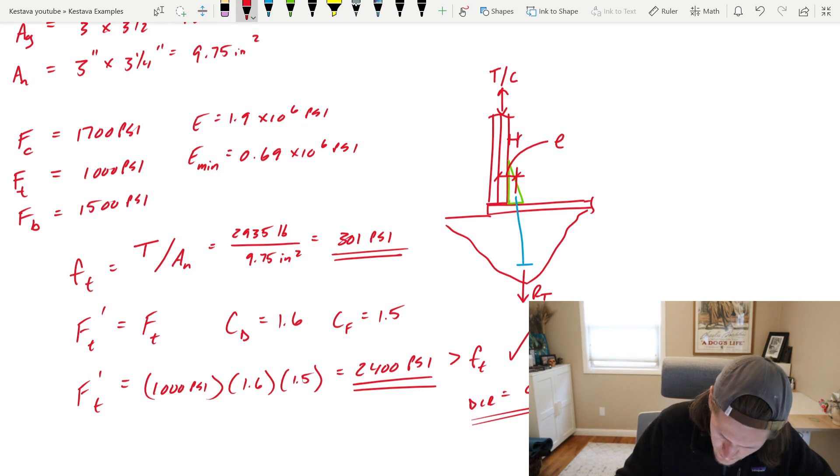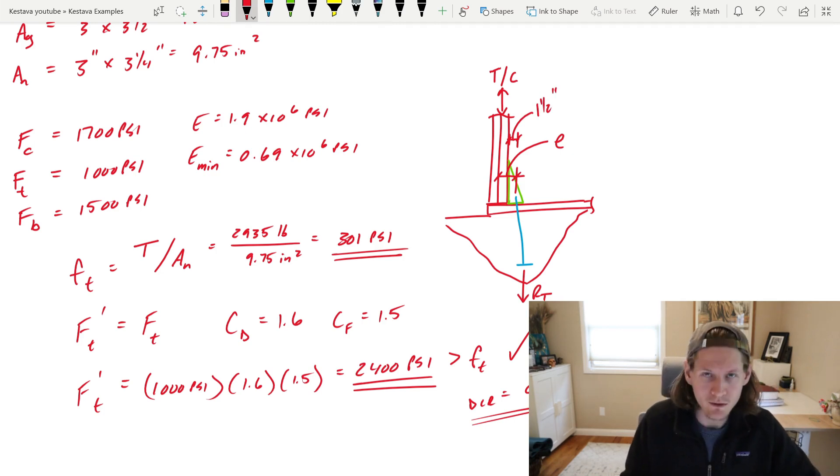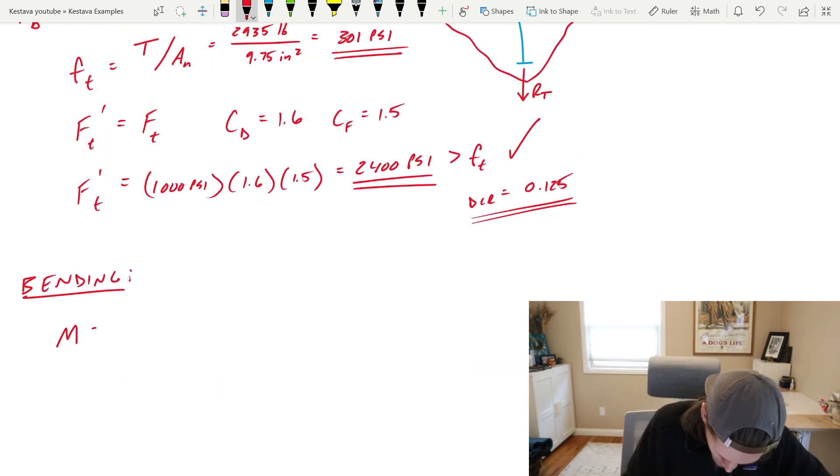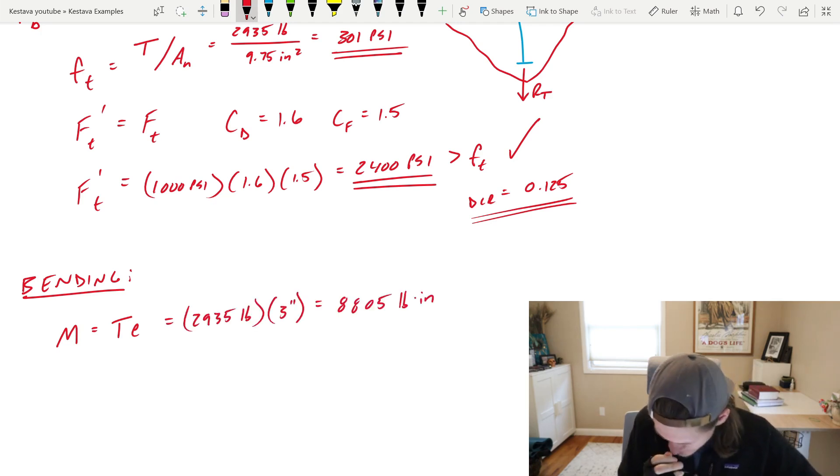So that means that force needs to get from the center line of your post to the center line of your anchor bolt. Well, that right there, ladies and gentlemen, that to me smells like some eccentricity, which now that you've introduced eccentricity means that you have some type of bending in your post. For a hold down, typically there's a one and a half inch offset from the anchor bolt to the face of your post. Your eccentricity is three inches.